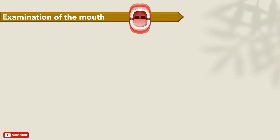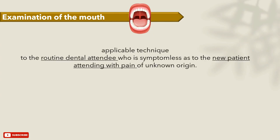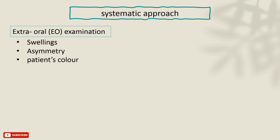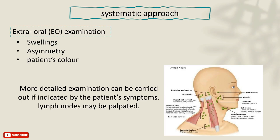We now come to the third and final point of examination: examination of the mouth. You should always know what's normal in order to differentiate it from what's abnormal. This routine should be applied to both routine dental attendees who are symptomless as well as new patients attending with pain of unknown origins. Use a systematic approach, starting with the extra-oral examination for any obvious swelling, asymmetry, or changes in the patient's skin and lip colour. Any more detailed examination can be carried out if indicated by the patient's symptoms, such as palpating the lymph nodes.